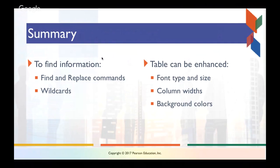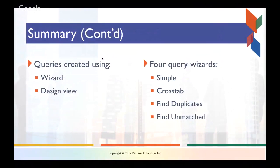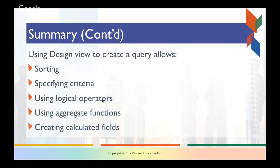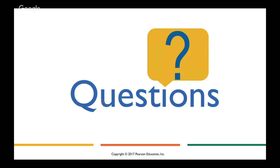In summary, we talked about wildcards and queries — the idea of questioning our database and getting the data back that we want. We can use the wizard or the Design View, which lets us find simple queries, cross-tab queries, finding duplicates, or finding unmatched records. Design View is where we specify queries of greater fidelity: sorting, criteria, logical operators, aggregate functions, and calculated fields. Those are queries in a nutshell, and you'll get into them more as you get into your exercises. That marks the end of this broadcast.